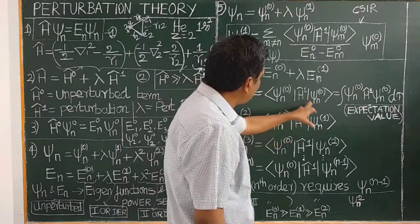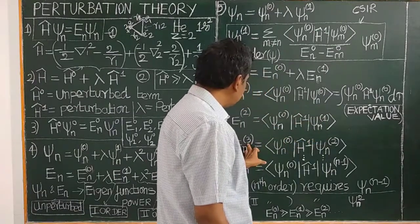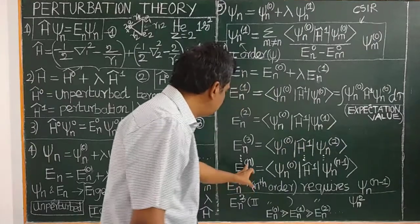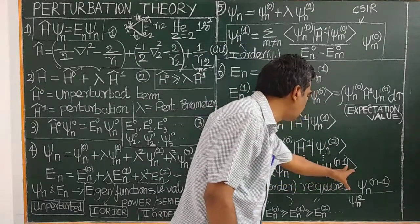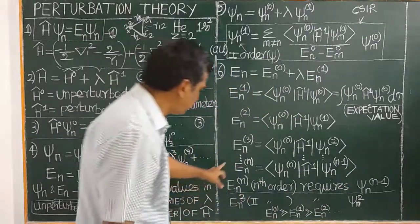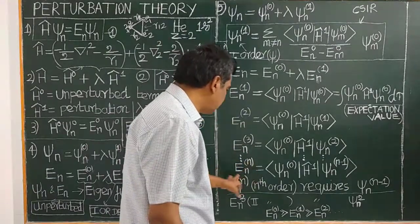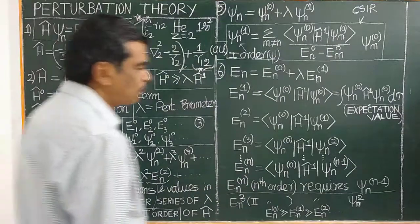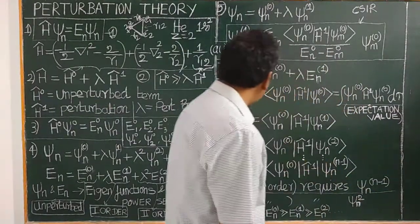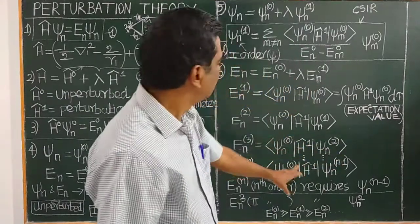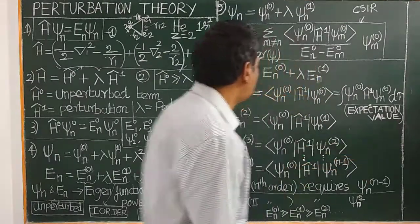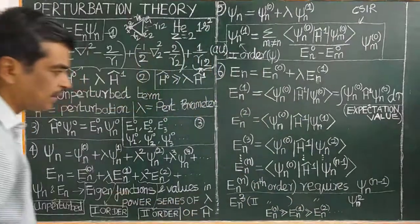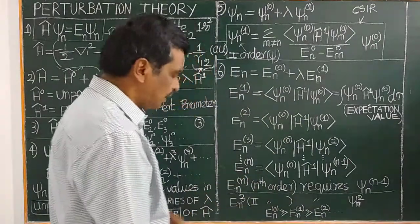For the calculation of the nth-order energy, we require the knowledge of the wave function of order n minus one. Higher-order corrections give better energy results, but because they are very, very small, they are often neglected.